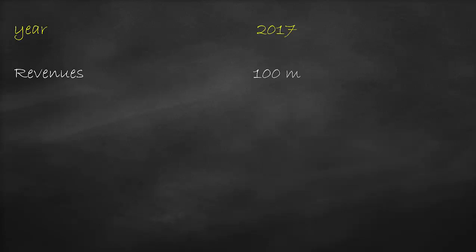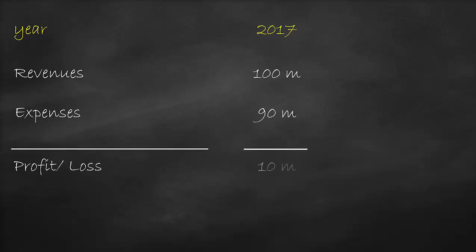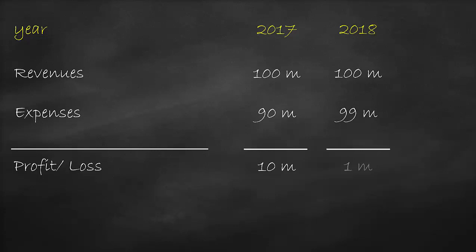In 2017, the company has revenues of $100 million and expenses of $90 million, so the company generates a profit of $10 million. In 2018, the company has revenues of $100 million and expenses of $99 million, so we have a profit of around $1 million.